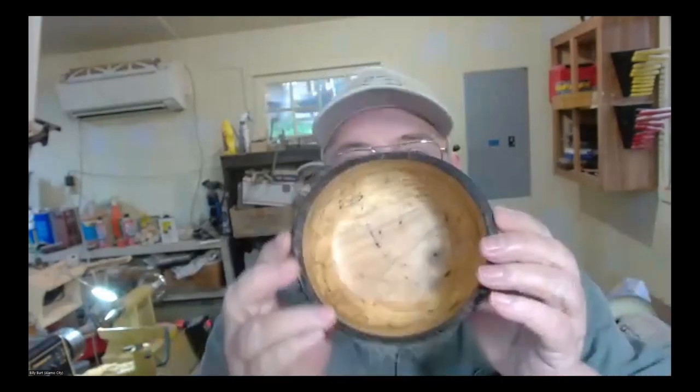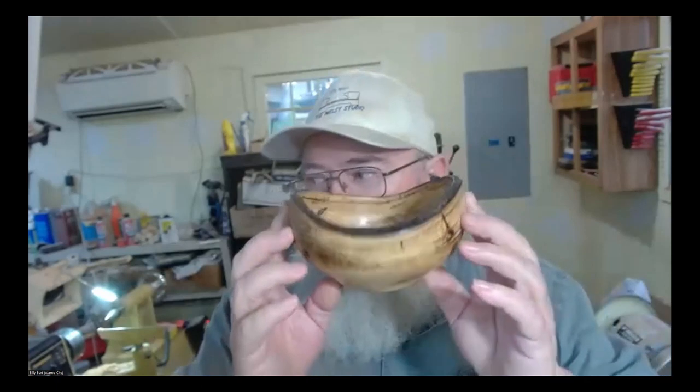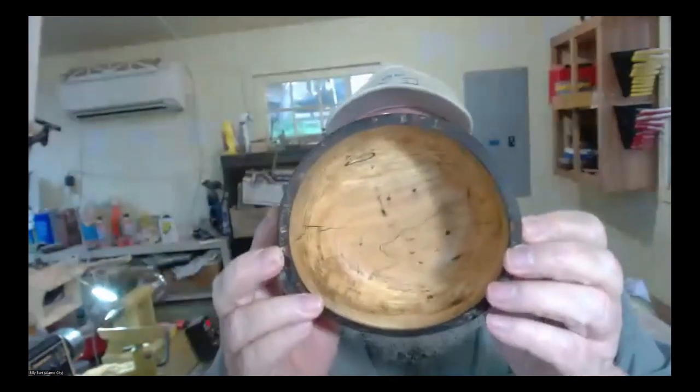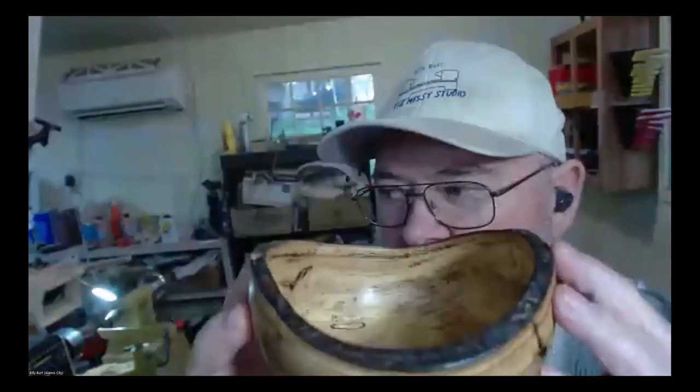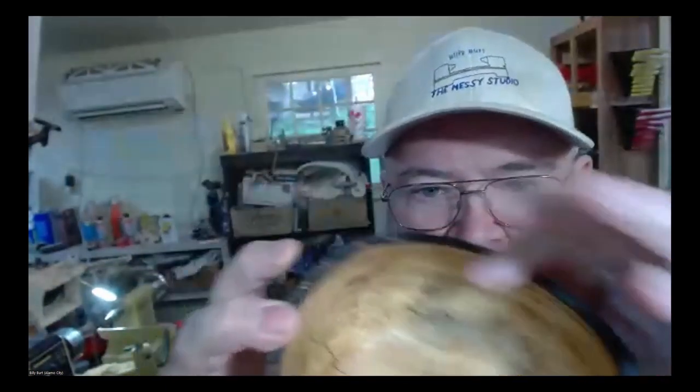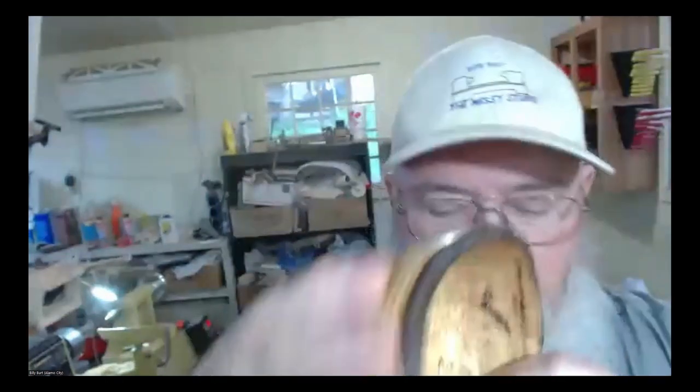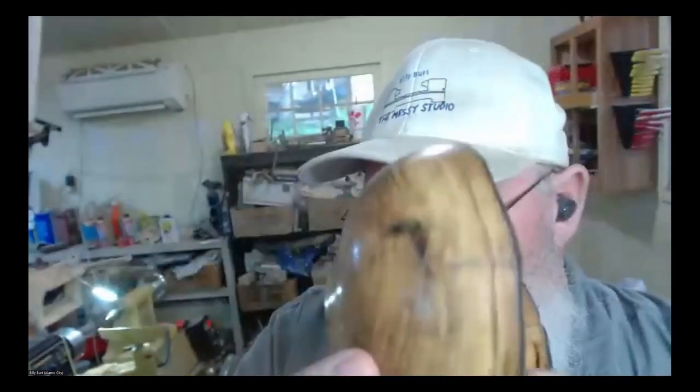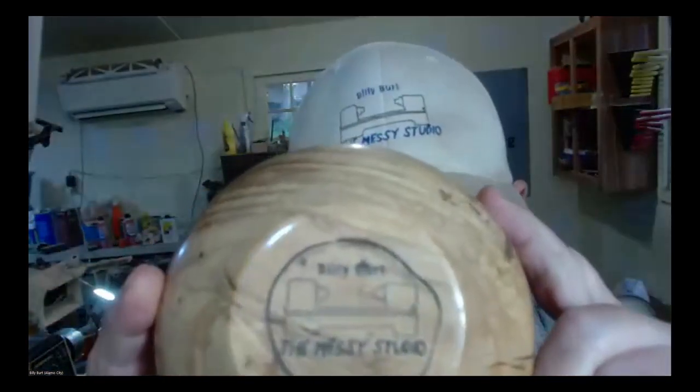This is just a little piece of ash, a natural edge bowl with some light spalting. It didn't have any bark so I burnt it. I also burnt and sanded back the outside, and used my new laser to do my logo in the bottom. That's my show and tell.